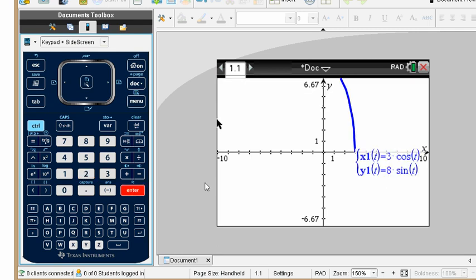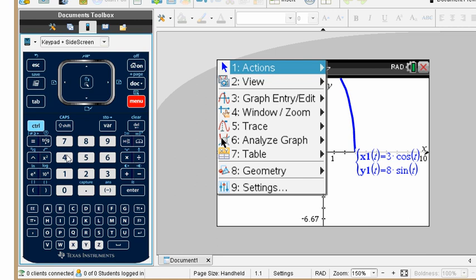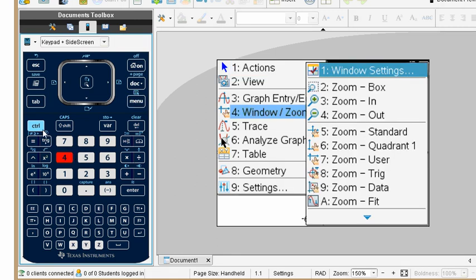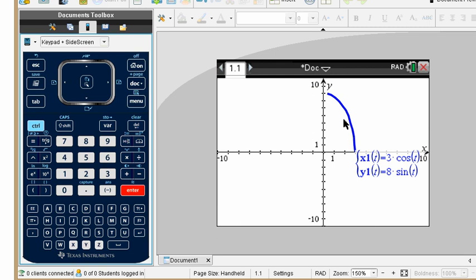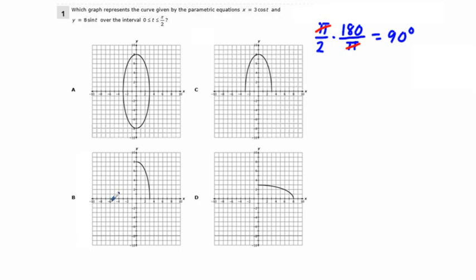And when we do that we get this thing right here. And just to change the window a little bit to see better, go to window settings. We're going to go y minimum from negative 10 to y maximum of 10. And yes, we just see this quarter of an ellipse here in the upper right quadrant, which confirms again our correct answer choice B.